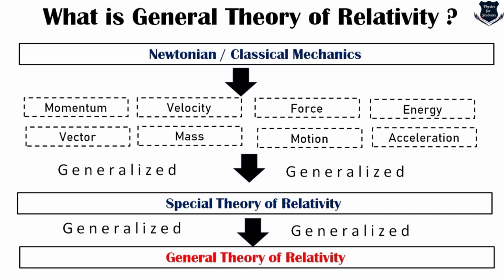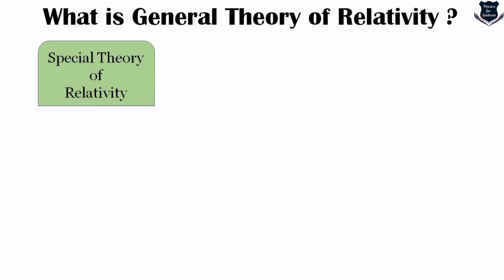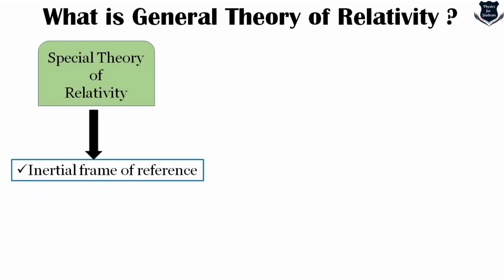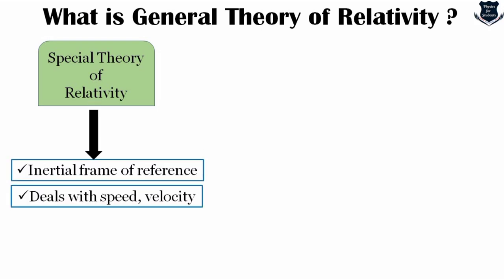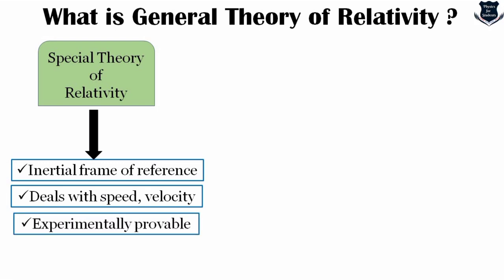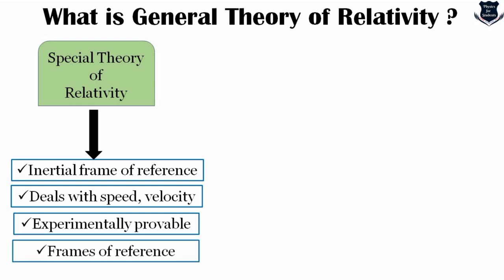As a classical approach, we generally start with special relativity, because the mathematics we're going to learn has already been used in its predecessor. Special relativity generally deals with inertial frames of reference — frames that are not accelerating. It primarily deals with speed and velocity, is experimentally provable, and deals with frames of reference. We should be very aware that it deals with inertial frames, speeds close to the speed of light, and coordinate transformations between frames.